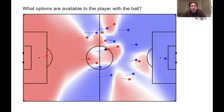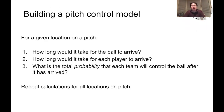It's also worth noting that this model says nothing about the value of the potential pass or moving the ball to a given location in the field. It just shows you where the team is likely to retain possession of the ball.